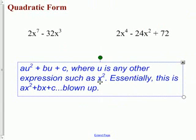U can be any other expression such as X squared, in which case that would be AX to the fourth because it's X squared squared plus BX squared plus C, where A, B, and C are just any other coefficients. What we care about are the U's.